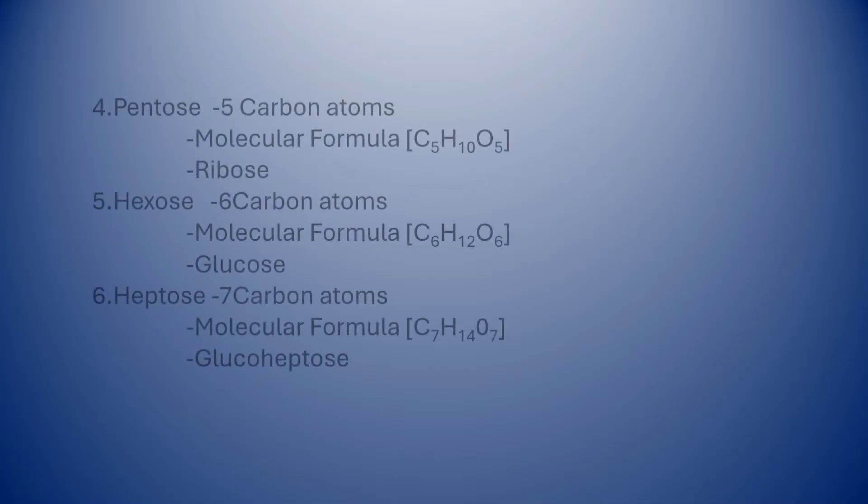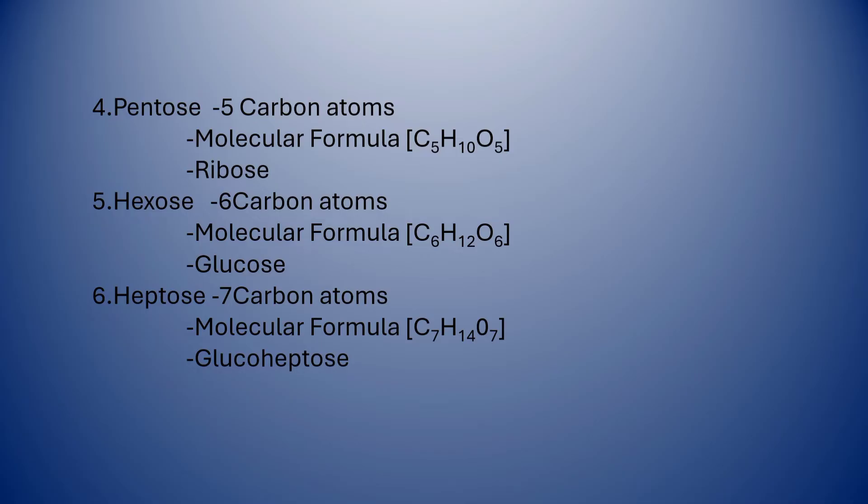Pentose consists of five carbon atoms with molecular formula C5H10O5. Hexose consists of six carbon atoms with molecular formula C6H12O6. Heptose consists of seven carbon atoms with molecular formula C7H14O7.